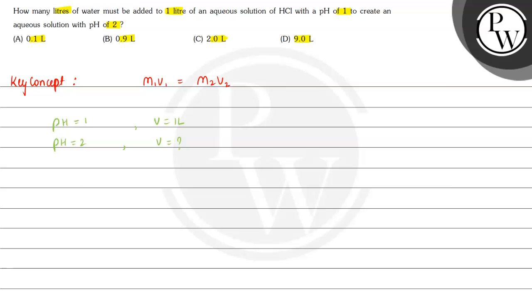When pH is equal to 1, the H+ concentration will be equal to 10 to the power minus 1 molar.